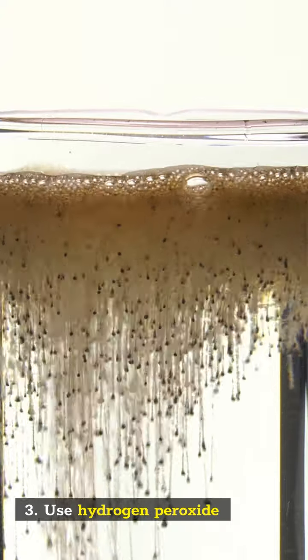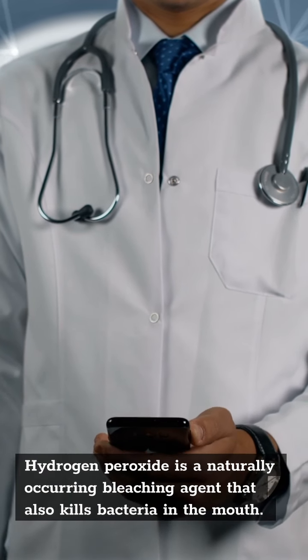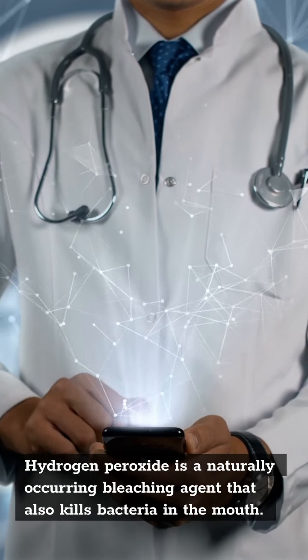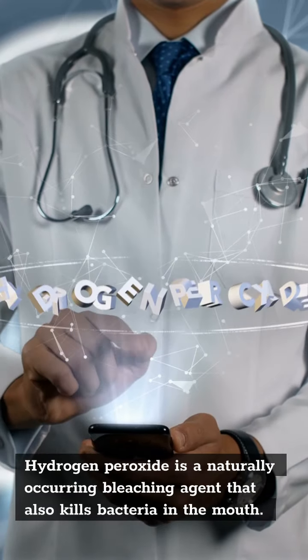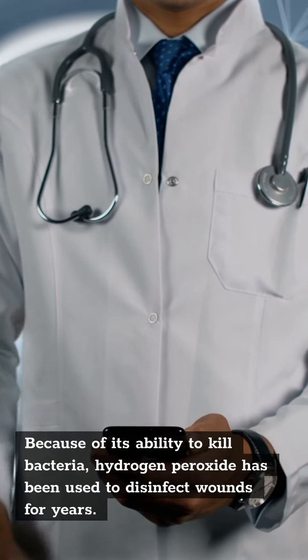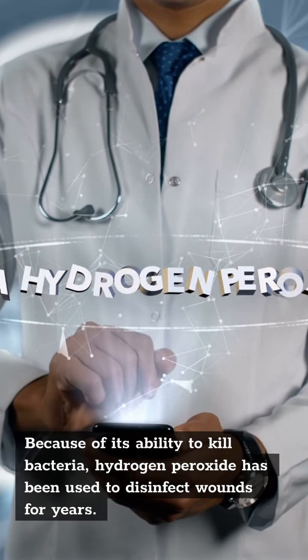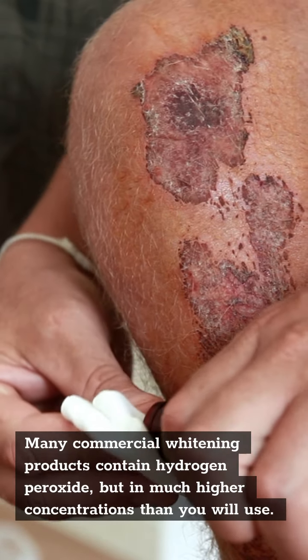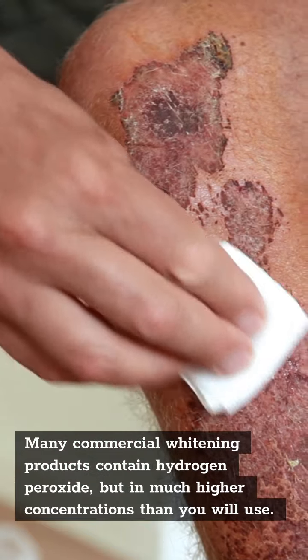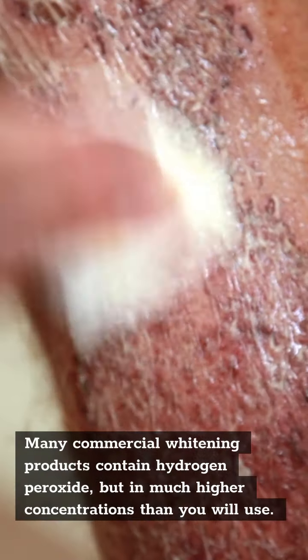Number three, use hydrogen peroxide. Hydrogen peroxide is a naturally occurring bleaching agent that kills bacteria in the mouth. Because of its ability to kill bacteria, hydrogen peroxide has been used to disinfect wounds for years. Many commercial whitening products contain hydrogen peroxide, but in much higher concentrations than you will use.